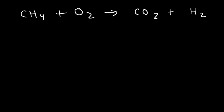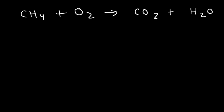The best way to balance it is to balance the carbon atoms first. We have one carbon on the left and one carbon on the right, so the carbon atoms are balanced. In the next step, balance the hydrogen atoms. We have four on the left and two on the right, so we need to put a 2 in front of H₂O.